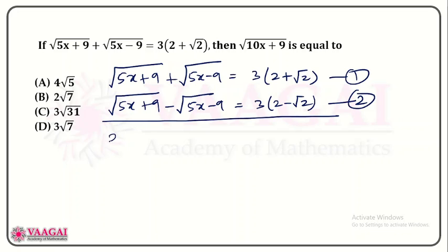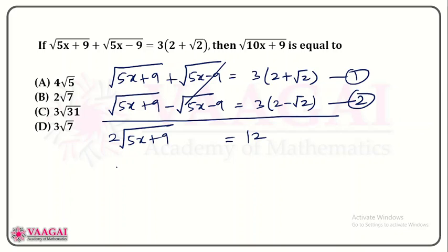Now we simply add the two equations. Adding equation 1 and equation 2, on the left hand side we get 2 times root of 5x plus 9, as the root of (5x minus 9) terms cancel. On the right hand side we have 3(2 plus root 2) plus 3(2 minus root 2), which gives 6 plus 6 equals 12.